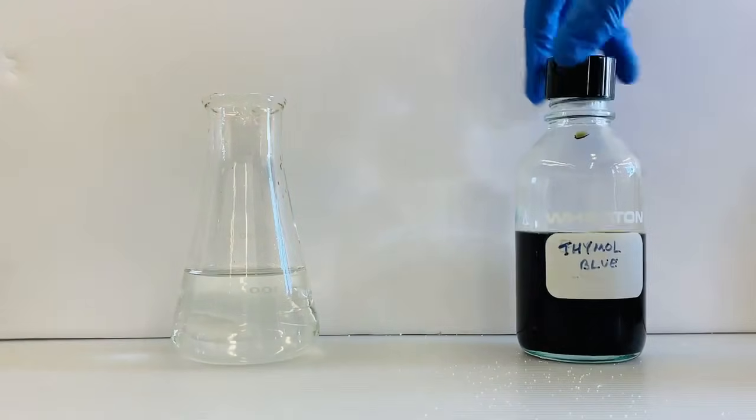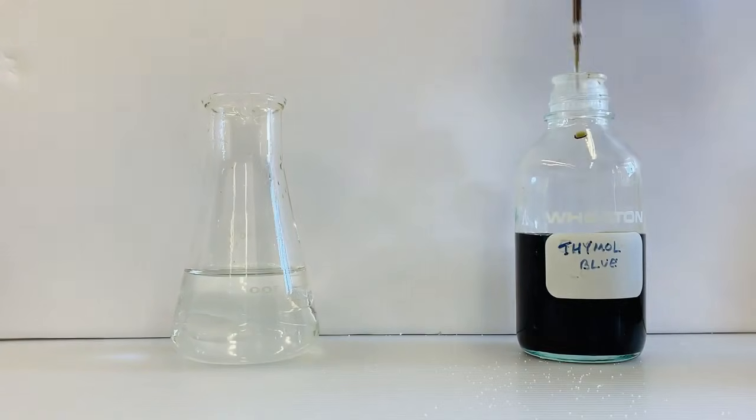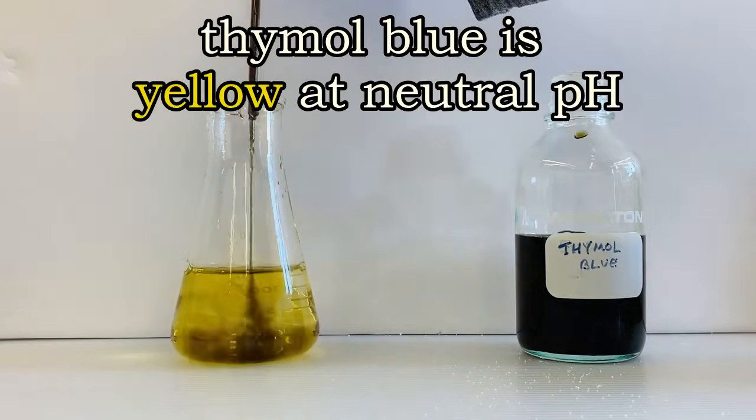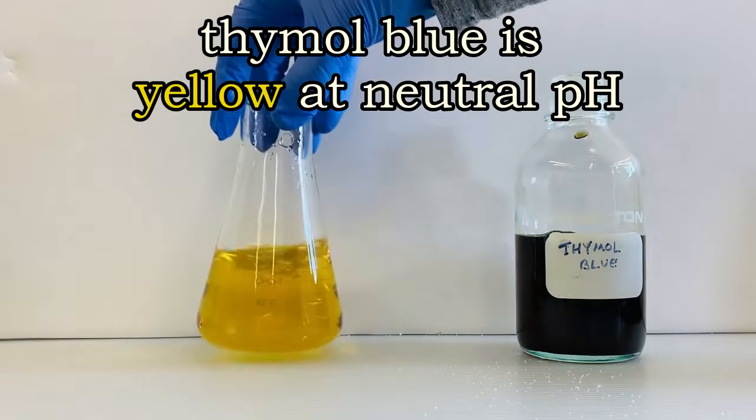Let's investigate the properties of thymol blue so we can understand the color changes a little bit better. We see that if we add thymol blue to water, which is close to neutral in pH, a yellow color results.